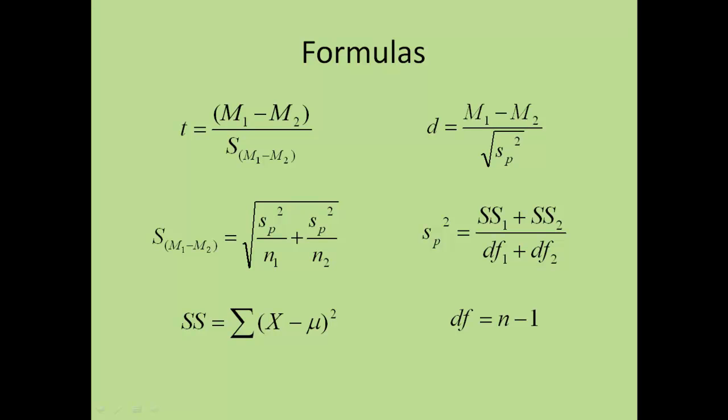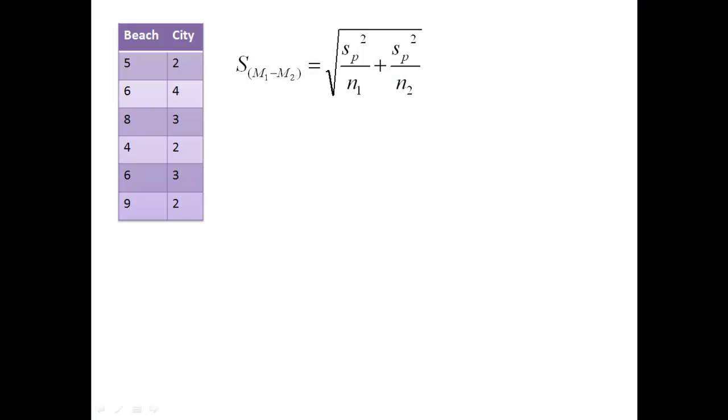Now we have our pooled variance, and we can calculate the standard error of the mean. Here's the formula for the standard error of the mean again. It's a really straightforward calculation. We just calculated the pooled variance, and we know that it was equal to 2.07. So you just plug and chug, and you end up with a standard error of the mean of 0.83.